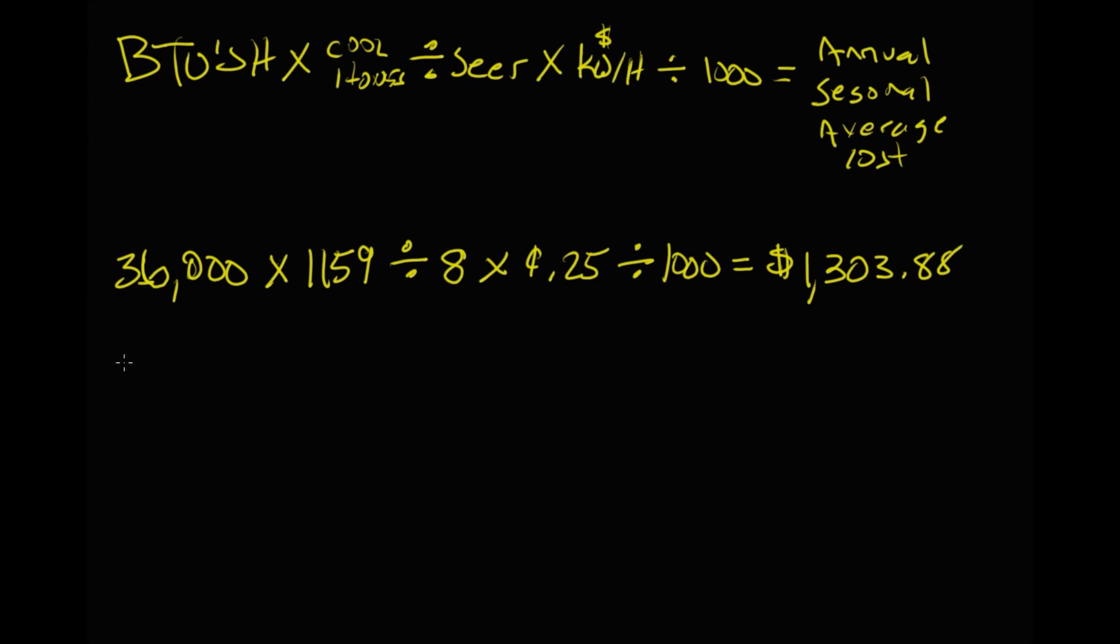So let's do the same calculation. But this time we're going to keep the same size equipment. We're going to have the same cooling hours because all we're doing is changing up the piece of equipment, putting a more efficient one in. But I'm going to go with 16 SEER. And then we've got the same kilowatt rate. That hasn't changed. We're going to divide it by the thousand. And now this equals $651.94.